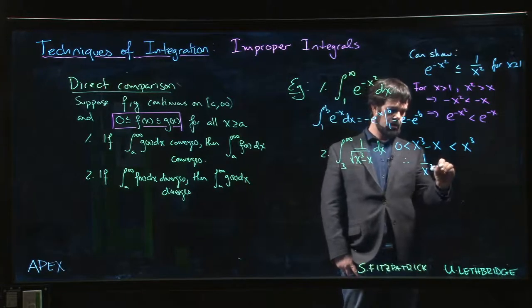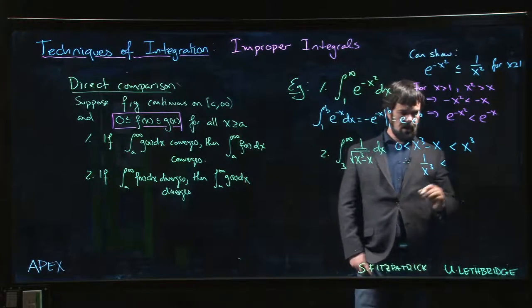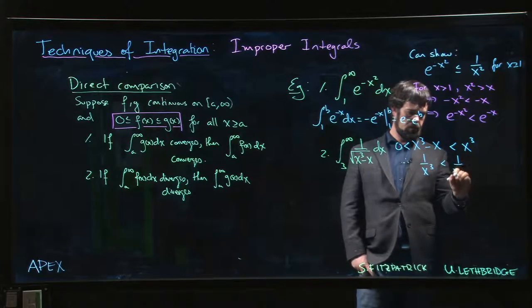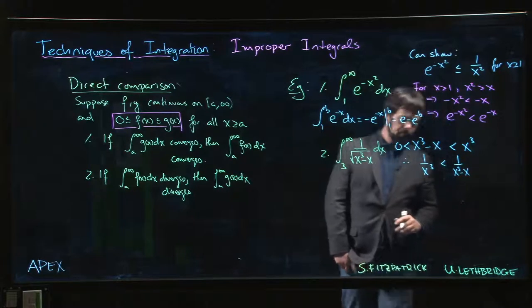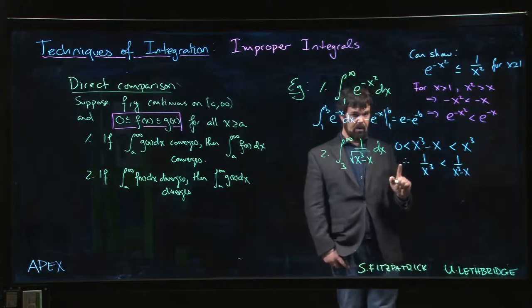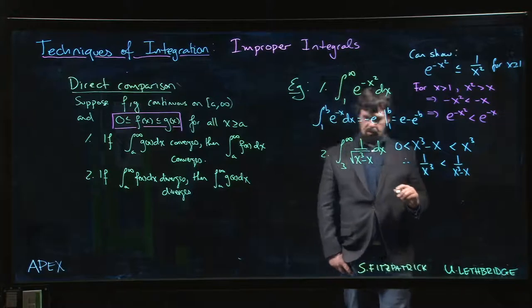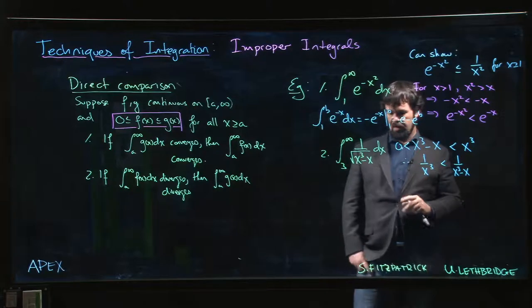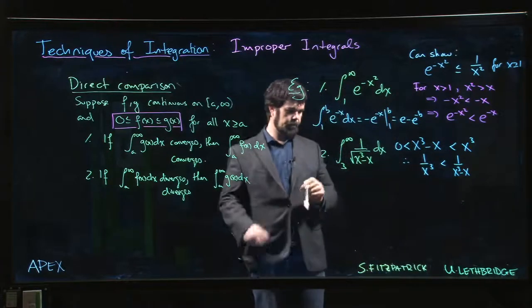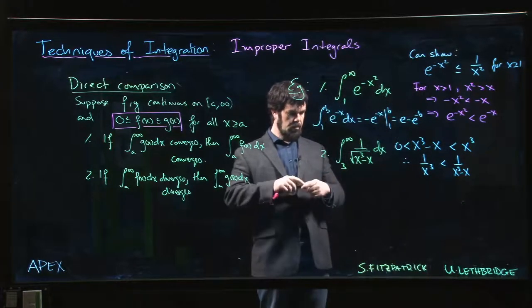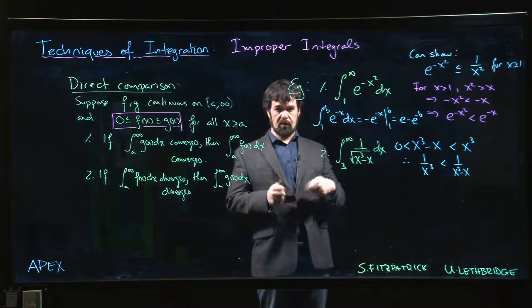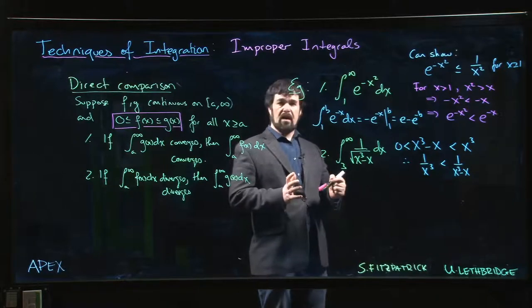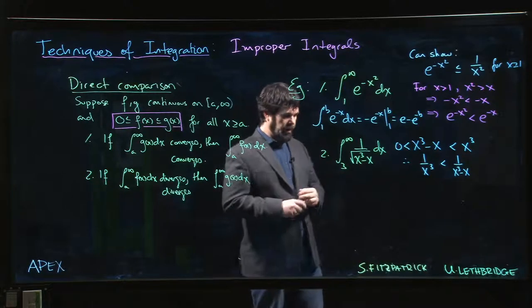That inequality goes the wrong way. So we would like to have that work out. Doesn't quite point in the direction we want. We want to kind of make a comparison here with x cubed, or x to the 3 over 2. That's a p series. We can make that work. So that doesn't work. So what else can we try?